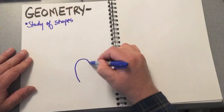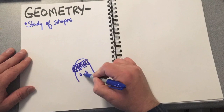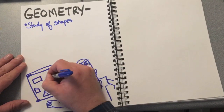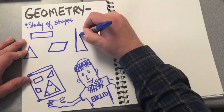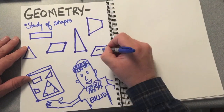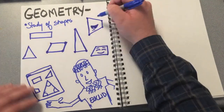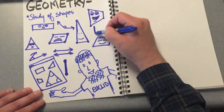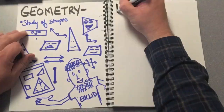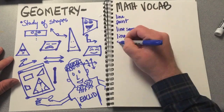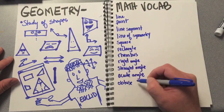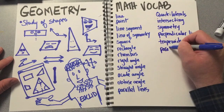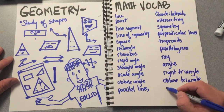We're going to channel our inner Euclid for the next few weeks. Who was Euclid? Well, he was the father of geometry, and he studied a lot of different concepts of geometry, just like you're going to study and explore a lot of different concepts in geometry. Now, there's gonna be a ton of math vocabulary words that you're going to have to keep track of. You're just gonna write them in your notebook, draw pictures and definitions. So let's get started.